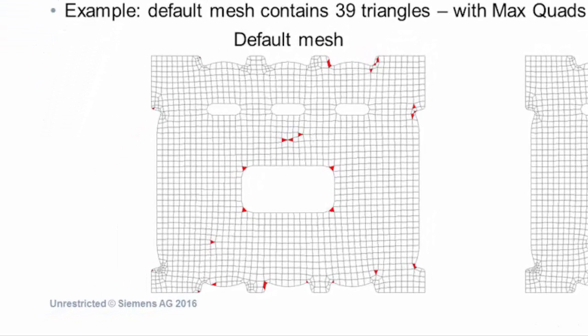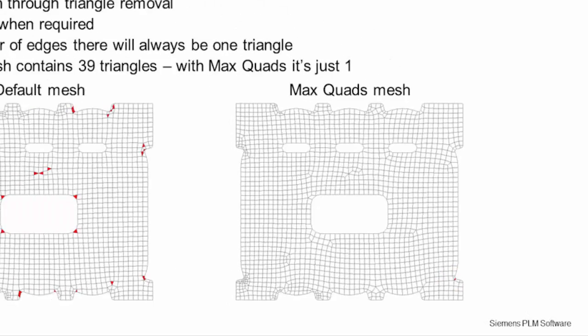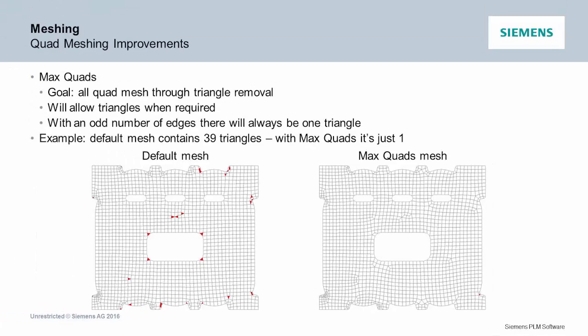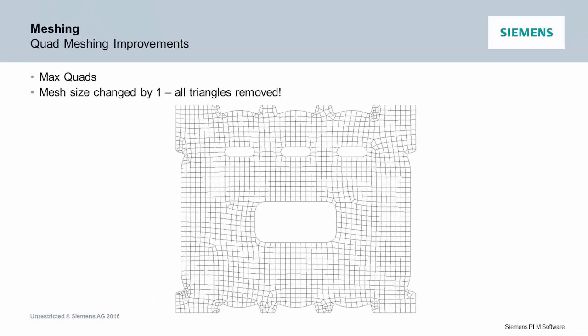Here's the default mesh — if you don't turn on max quads, this is what you still get. When you turn on max quads, it just takes those triangles out. Since there's an odd number on the periphery, you have to have at least one triangle. But if you change that to one mesh size, you can get an all-quad mesh. So if you want an all-quad mesh, now you can get one.